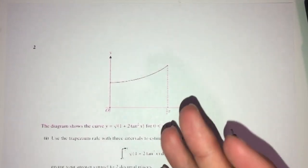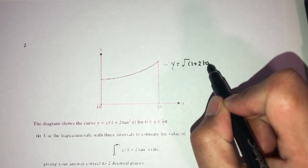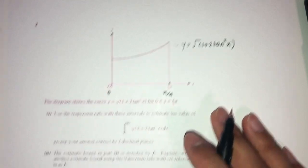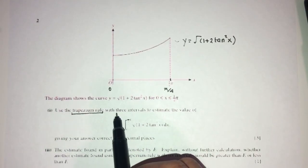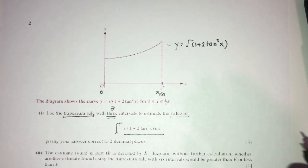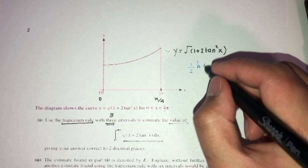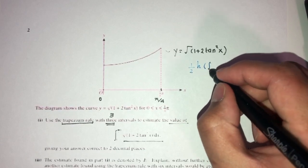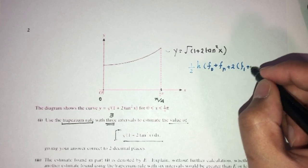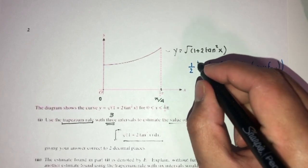Now let's move on to question number 2. We have a diagram with the curve equation y equals root of (1 + 2tan²x), between 0 and π/4. We have to use the trapezium rule with three intervals to estimate the value of this integral. The trapezium rule formula is: half times h times [first value plus last value, plus 2 times all the middle values]. It's just a formula we have to know.